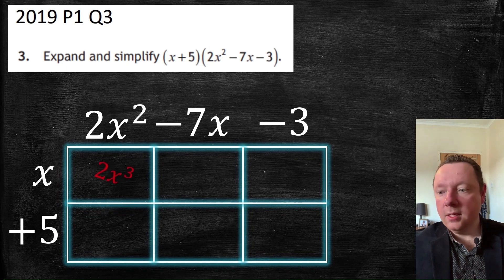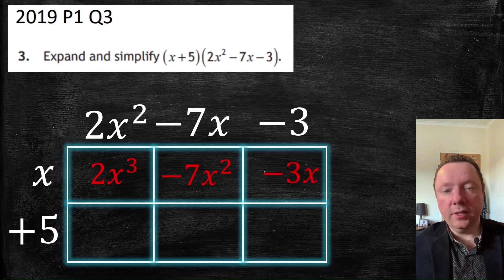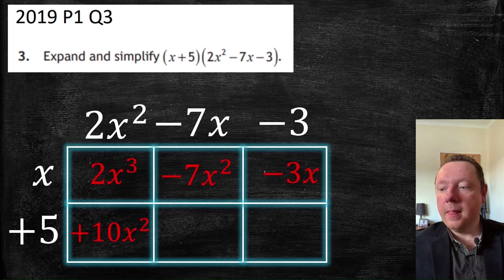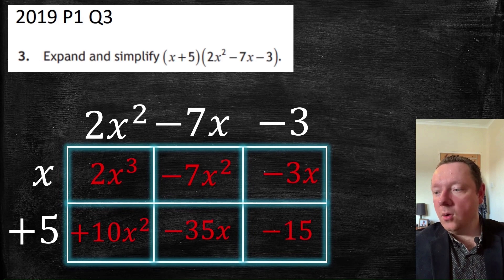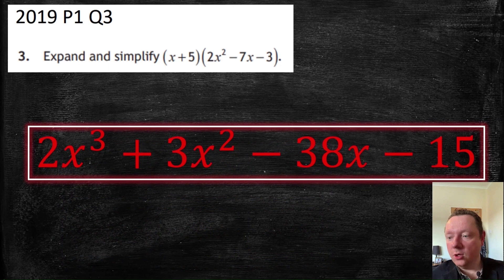x times 2x squared is 2x cubed. x times minus 7x is minus 7x squared. x times minus 3 is minus 3x. 5 times 2 is 10, so 10x squared. 5 times 7 is 35, so minus 35x. 5 times 3 is 15, so minus 15. Putting it all together, the answer is 2x cubed plus 3x squared minus 38x minus 15.